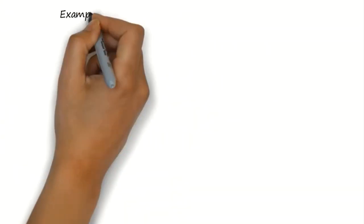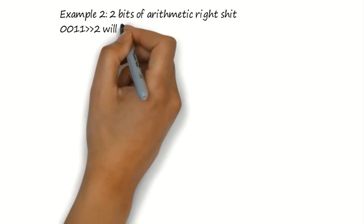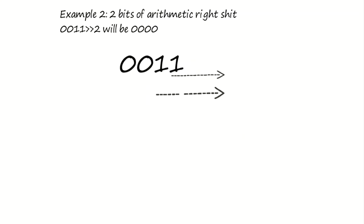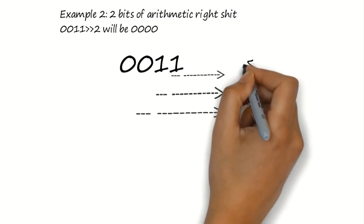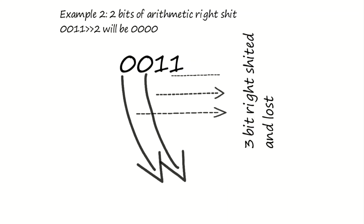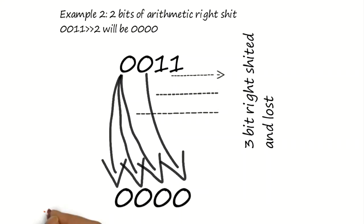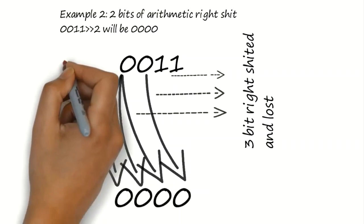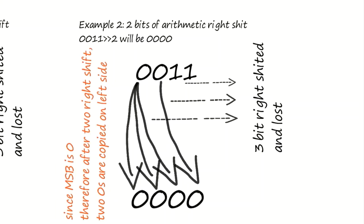In example 2, after 2 bit right shift, since MSB was 0, the left 2 bits will be replaced by 0. And it will become 0, 0, 0, 0 and 0.